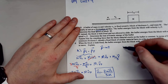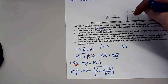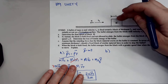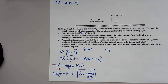Part B states: now the block is held fixed — someone is holding this block so it's not allowed to slide. The bullet emerges from the block with a velocity of V naught over two, so only half the original velocity. Determine how much kinetic energy was lost.